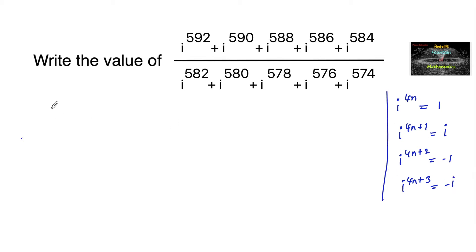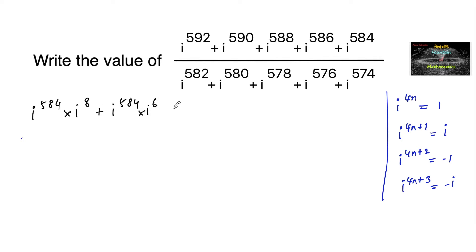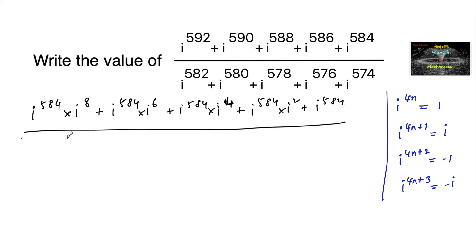In the numerator, the smallest power is i^584, which we take as common. So the numerator becomes i^584 times (i^8 + i^6 + i^4 + i^2 + 1).